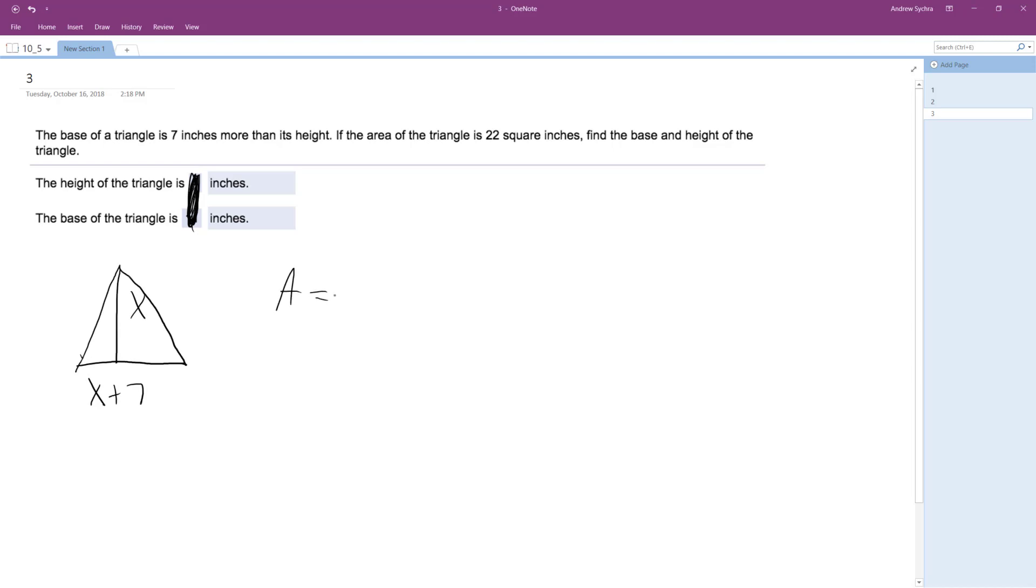And area is going to be equal to 1 half the base times the height. So in this instance, 1 half is equal to x times x plus 7 is equal to 22.